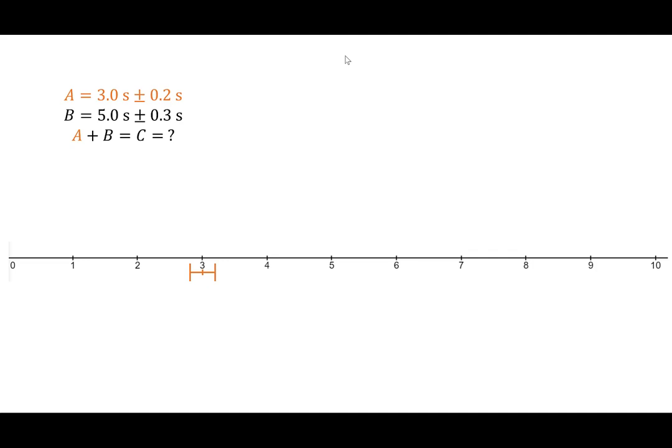Similarly, you can do the same thing for B. And then given these two numbers with their ranges, when we add them up, what do we expect in terms of the uncertainty in the end? Now hopefully it's not too surprising that C, the middle number, should just simply be the sum of the two middle numbers of A and B. So in this case, 3.0 seconds plus 5.0 seconds, giving 8.0 seconds.